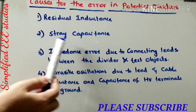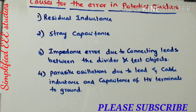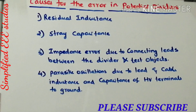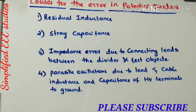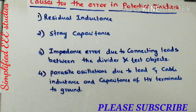Similarly, the second reason is stray capacitance, also known as parasitic capacitance. The reason for the formation of stray capacitance is because of connecting leads — especially switches. This is also responsible for getting a wrong reading in the case of potential divider measurement. So while doing the design, you need to consider stray capacitance and residual inductance.